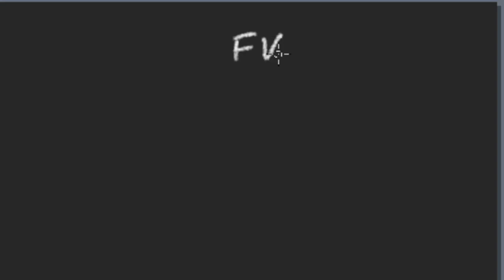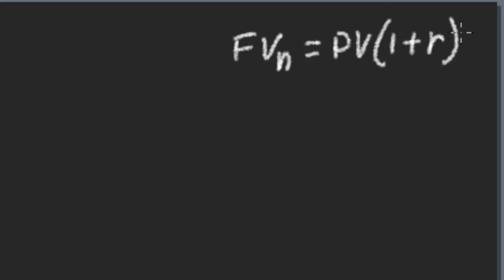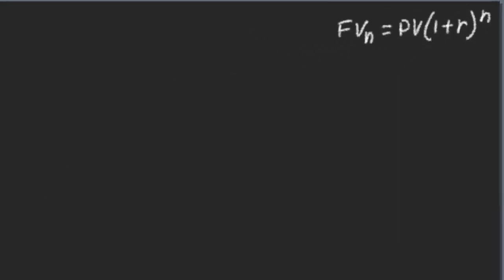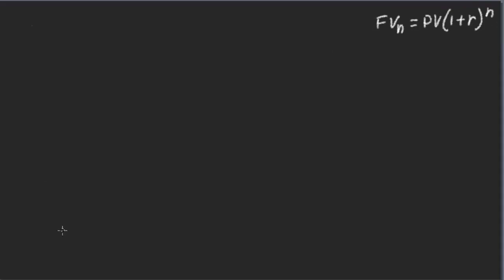Let's start. Before we start, let me write down the future value formula at the top right corner first. We know that future value after n years is equals to present value times (1 + r) to the power n. Let us see the procedure for how we can apply this formula to find the future value of multiple cash flows.